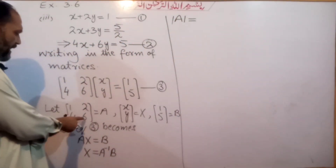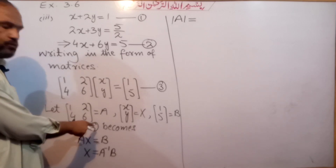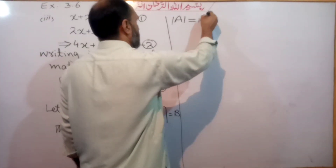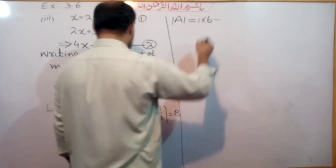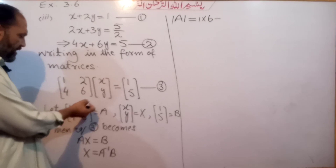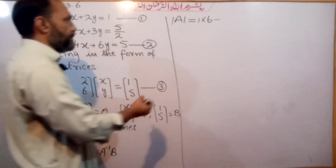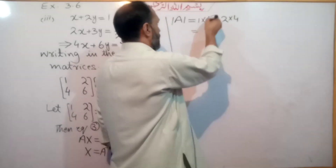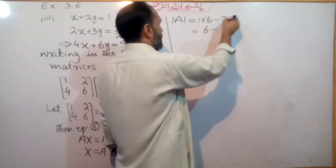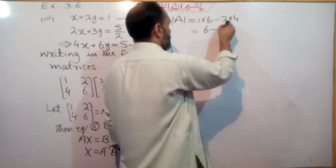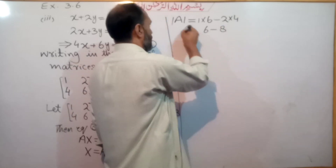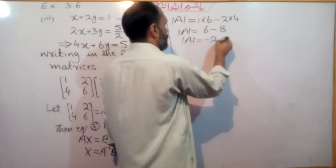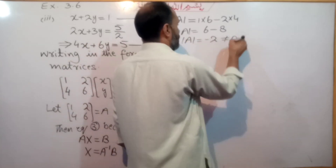For matrix A, we find the determinant using the principal diagonal elements. We take 1 multiplied by 6, then subtract the secondary diagonal: 2 multiplied by 4. So the determinant of A = 6 minus 8, which equals minus 2.